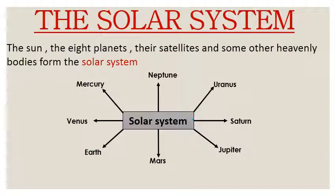Solar system kya hota hai? The sun and 8 planets, the satellites and some other heavenly bodies form a solar system. Solar system kya hota hai — woh sun, 8 planets aur kuch satellites ke milne se banta hai.